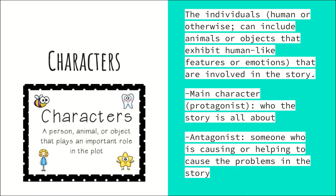The antagonist is also a main character, but they're the bad guy — someone who is causing or helping to cause problems in the story. Going back to Snow White and the Seven Dwarfs, the evil queen would be the antagonist. She is causing the problems — she wants to hunt down Snow White because she's the fairest of them all. When you think antagonist, think of the bad guy; the protagonist is the good guy, the main person.